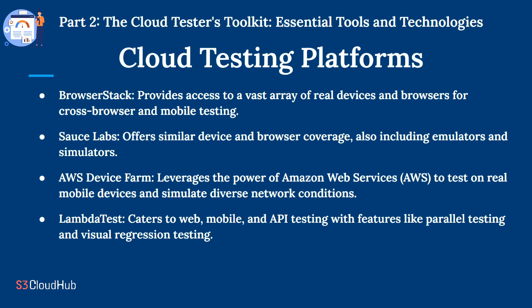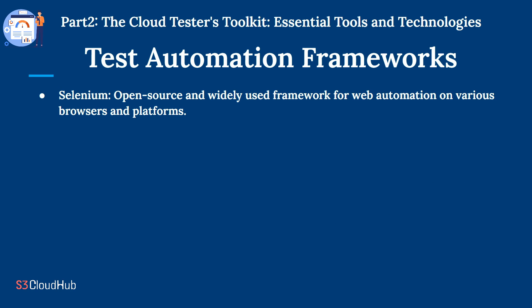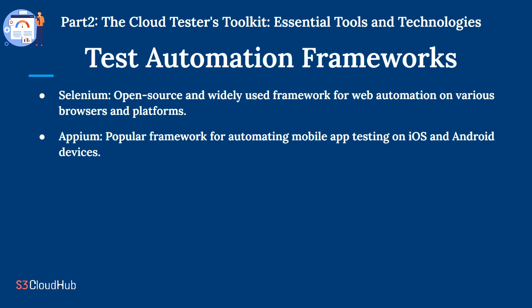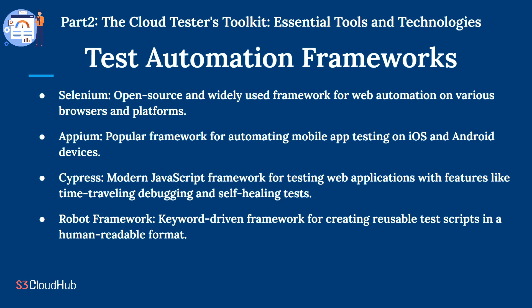LambdaTest caters to web, mobile, and API testing with features like parallel testing and visual regression testing. Test automation frameworks: Selenium is an open-source and widely used framework for web automation on various browsers and platforms. Appium is a popular framework for automating mobile app testing on iOS and Android. Cypress is a modern JavaScript framework for testing web applications with features like time-travel debugging and self-healing tests. Robot Framework is a keyword-driven framework for creating reusable test scripts in a human-readable format.